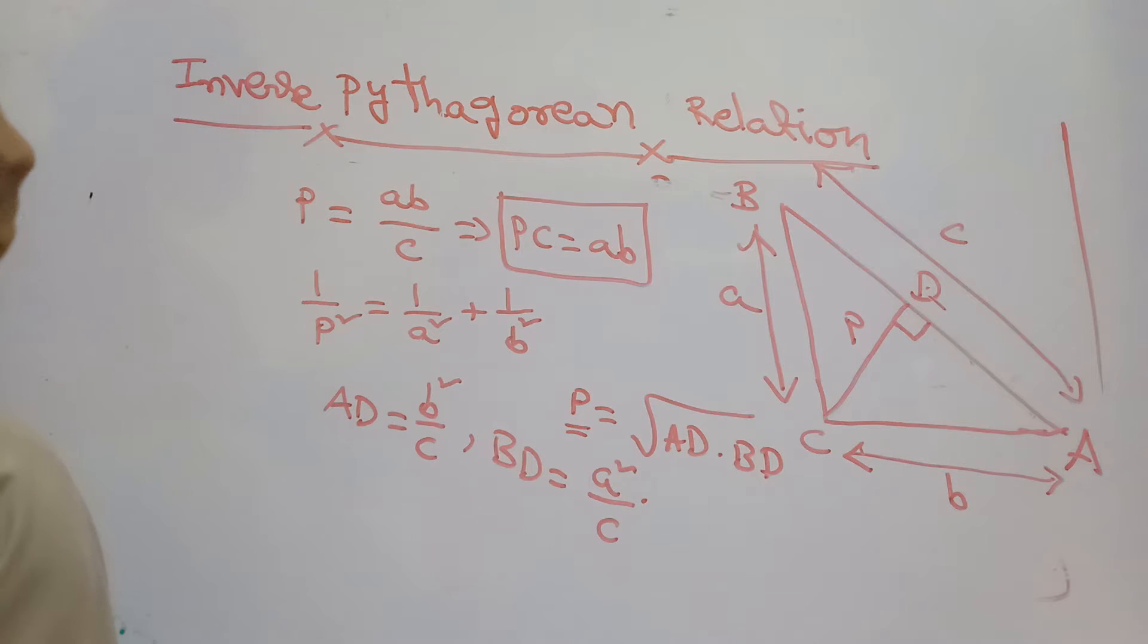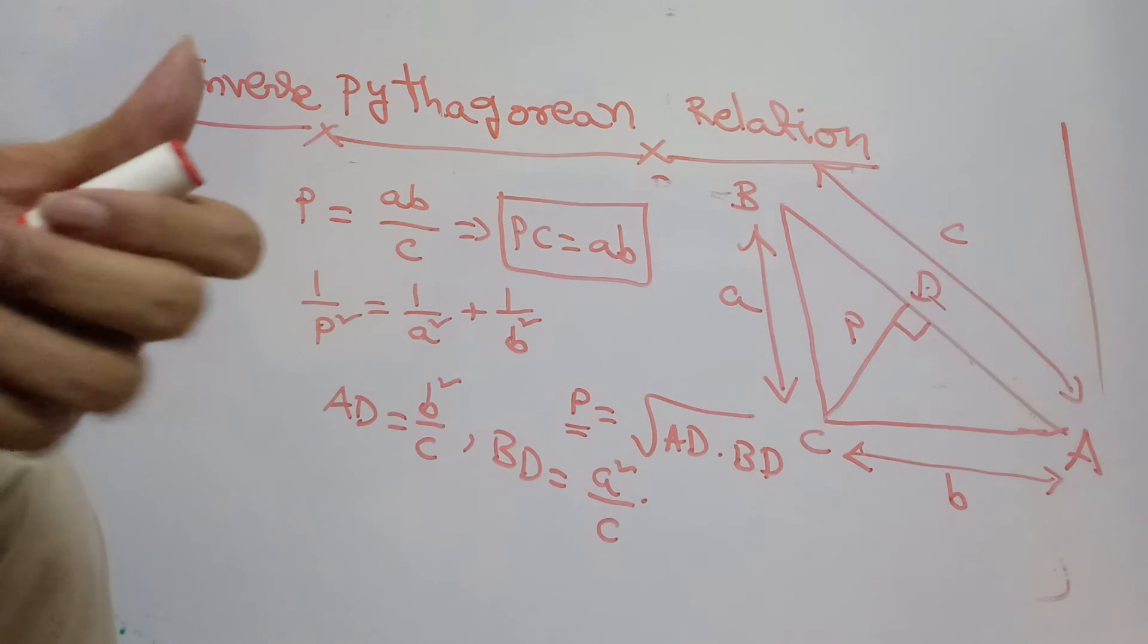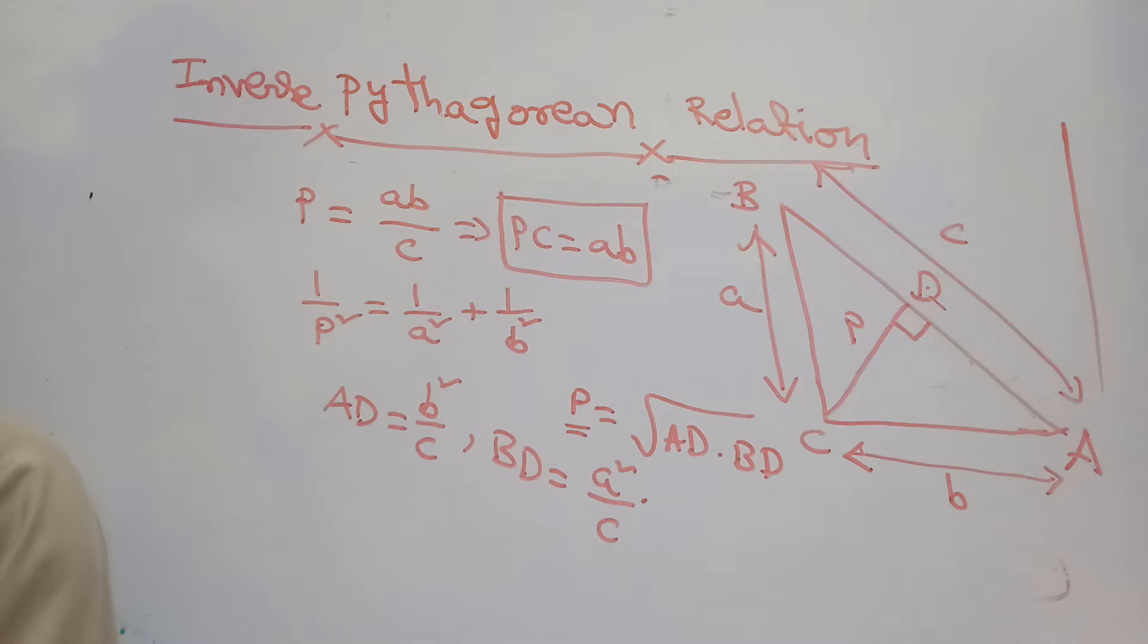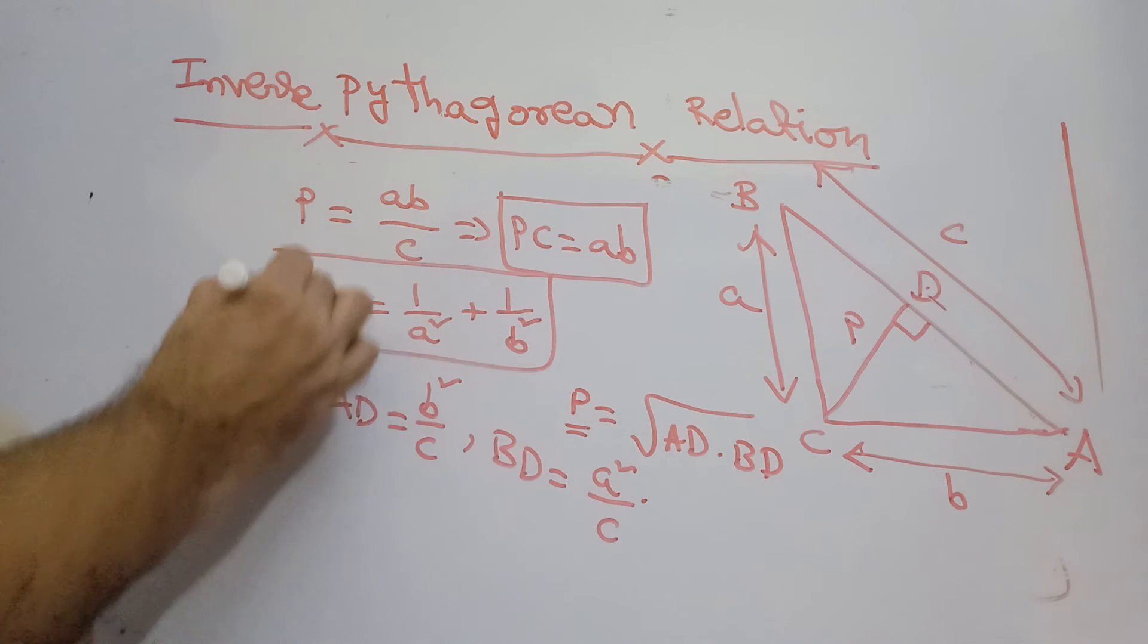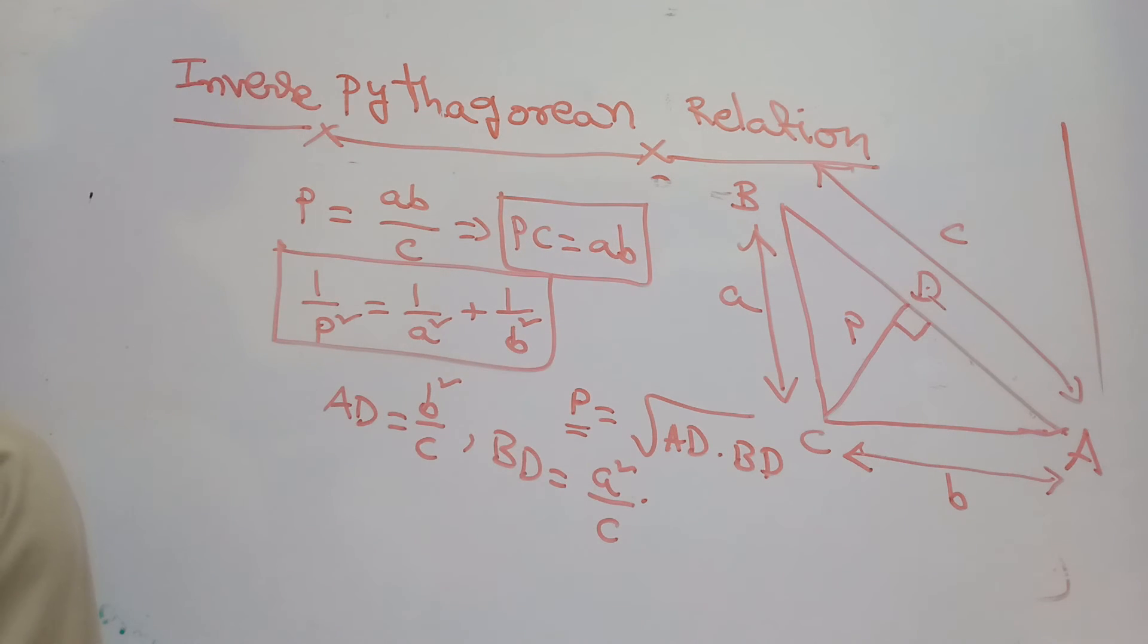And the proofs of this can be done by using similar triangles, and it is very easy. Watch my next video. This is about the inverse Pythagorean relation, and especially this is called the inverse Pythagorean relation. This is very easy, and watch my next video to know about this one.